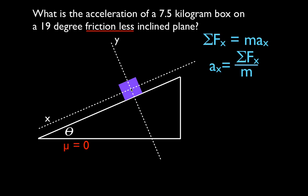We're on earth, so there is gravity. The gravitational force acts straight down, perpendicular to the page, pointing toward the center of the earth — it is not drawn along the y-axis. There is one other force: the normal force. It acts perpendicular to the inclined plane, along the y-axis. Those are the only two forces acting on the object: gravity and the normal force. There's no push, no pull, no external forces, no friction.